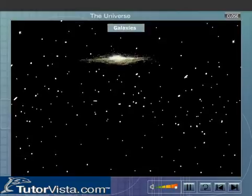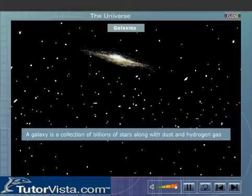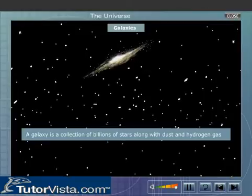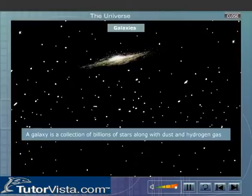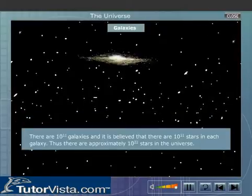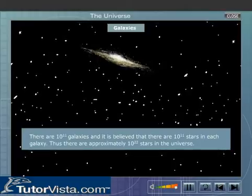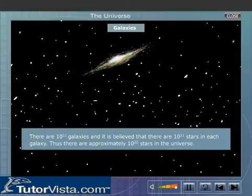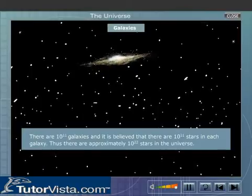What is a galaxy? A galaxy is a collection of billions of stars along with dust and hydrogen gas. Empty space separates galaxies from each other. There are 10 to the power 11 galaxies and it is believed that there are 10 to the power 11 stars in each galaxy. Thus, there are approximately 10 to the power 22 stars in the Universe.